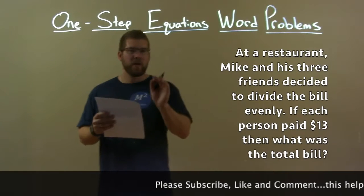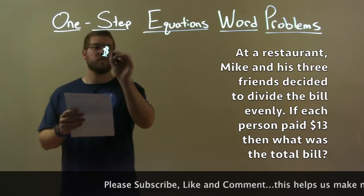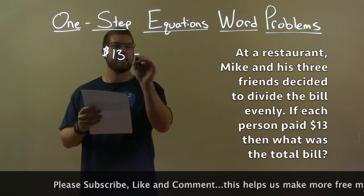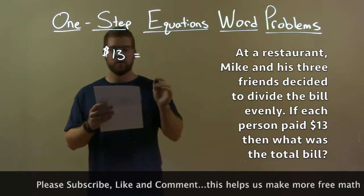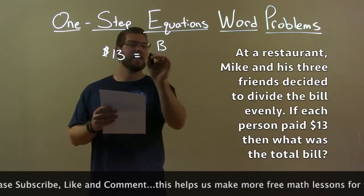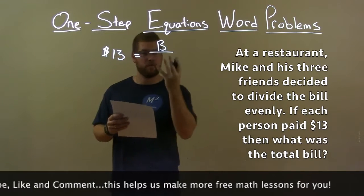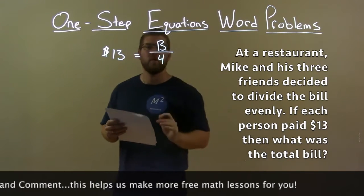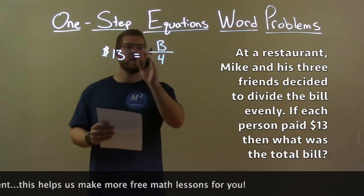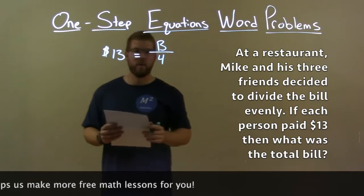Each person paid $13. The total bill, let's call that B, was divided evenly between Mike and his three friends — a total of four ways. So we now have an equation: $13 equals the total bill B divided by four.